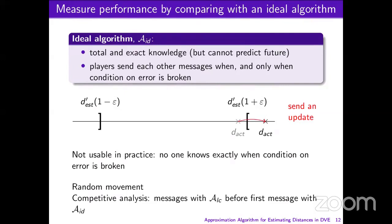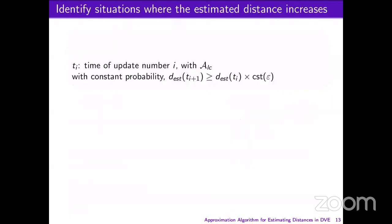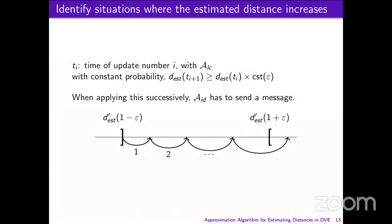In the main part of our paper, we look at random movement patterns. We compare these two algorithms and find upper bounds on the number of messages sent with LocalChange before the first message with the ideal algorithm. In order to find these upper bounds, we identify situations where the estimated distance of LocalChange increases significantly. We look only at the instances T_i where LocalChange sends messages, and see that there is a constant probability that the next estimated distance at time T_{i+1} gets greater than the previous estimated distance at time T_i multiplied by a constant. We then see that when this happens successively, the ideal algorithm has to send a message.